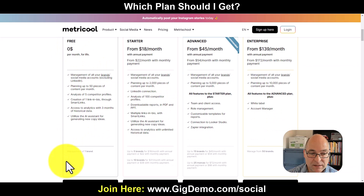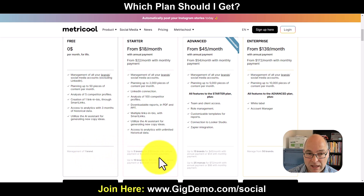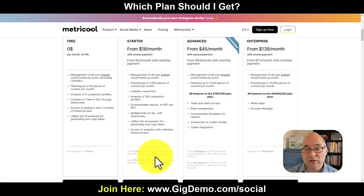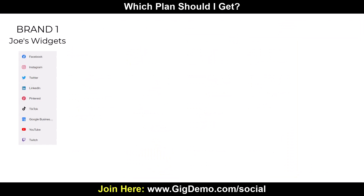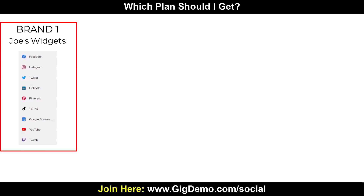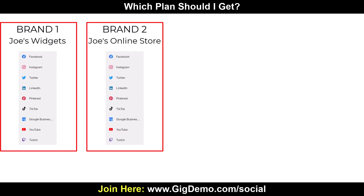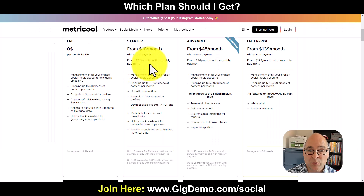Also take note that the free plan you can only manage one brand, and the starter you get five brands with it, and ten brands are slightly more at $31 a month. But even with five brands that is plenty. So what do they mean by brands? Well, let's say you had a brand called Joe's Widgets on Facebook, Instagram, TikTok, YouTube, Pinterest, Twitter and so on — that Joe's Widgets is one brand. But if you had another brand called Joe's Online Store on different social media networks, that would be a separate brand.